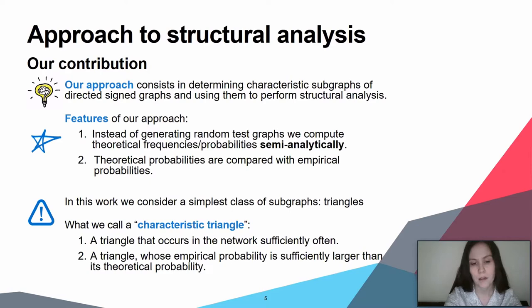Specifically, we will be interested in determining which triangles are characteristic for a given network. The notion of characteristic requires some additional elaboration. One might consider a triangle characteristic if it appears in the whole network more often compared to other triangles. However, we know that distinct triangles may have different probabilities of occurrence.